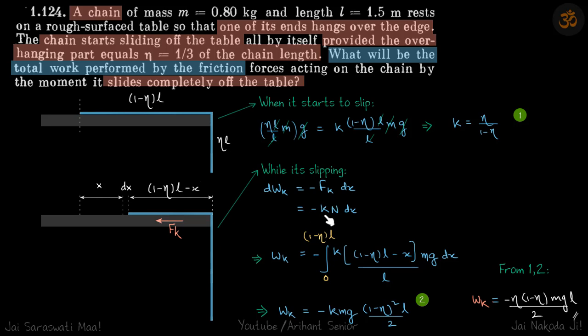fk is k into n, and n is the mass of the rest of the chain. Mass of this part of the chain will be the length upon total length into mass times g*dx. Same thing we have done here using the unitary method to find the mass of the part of the chain.